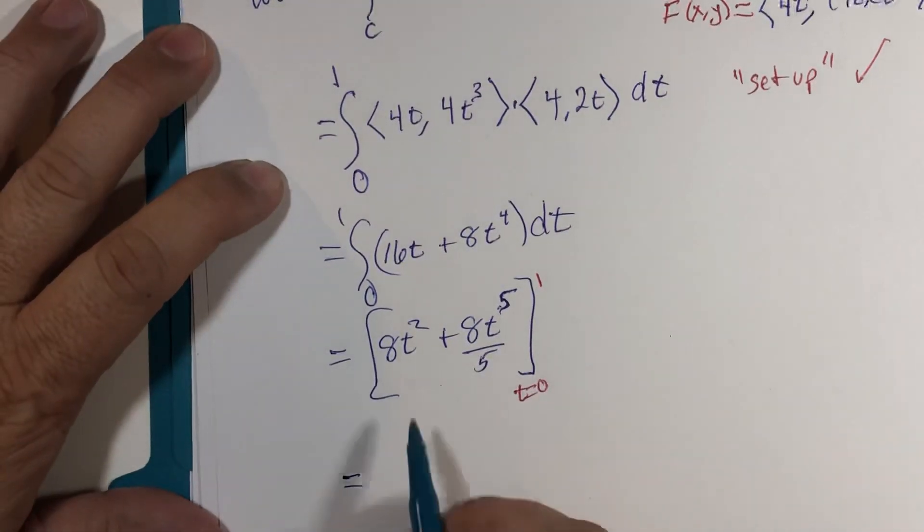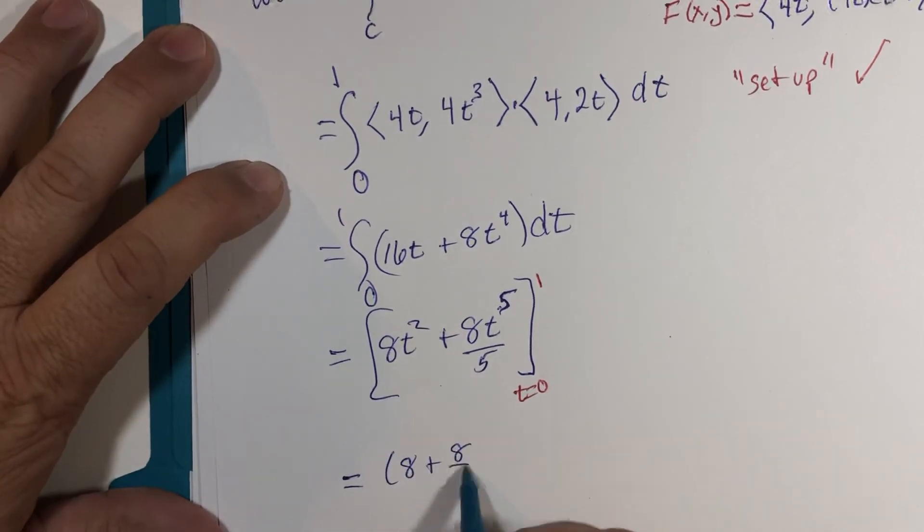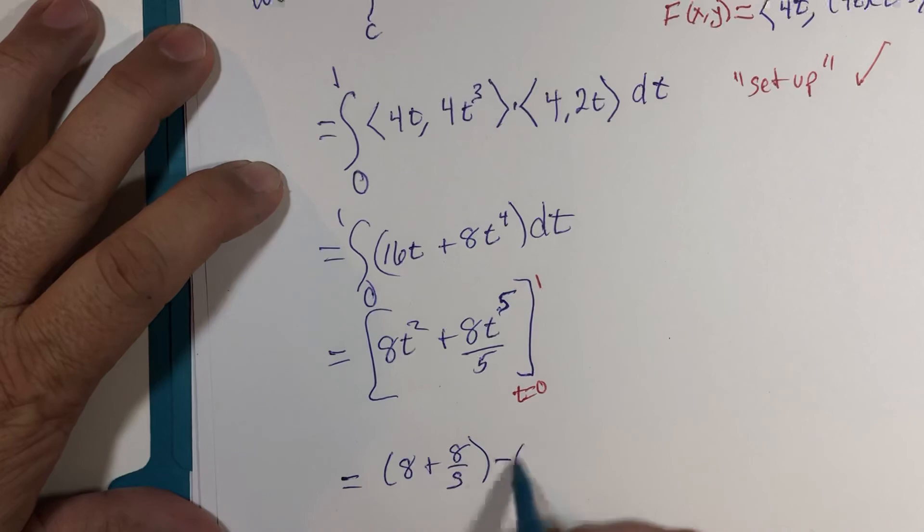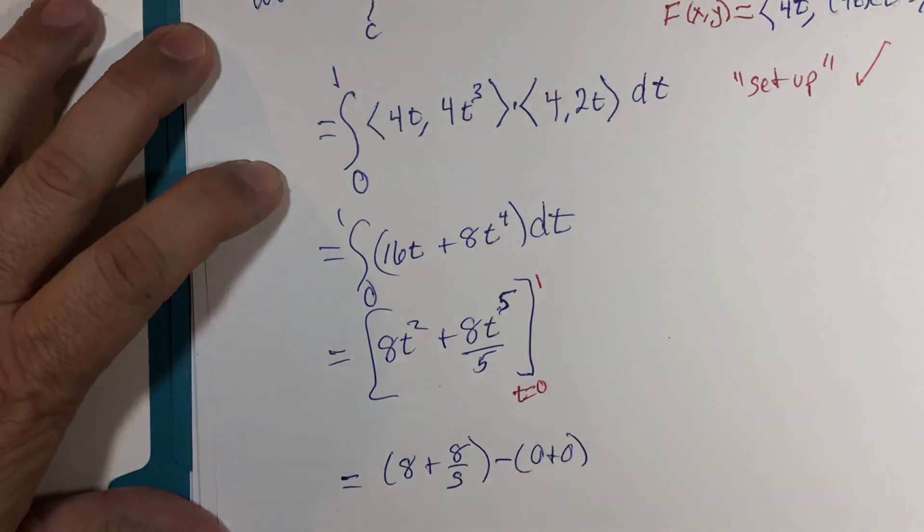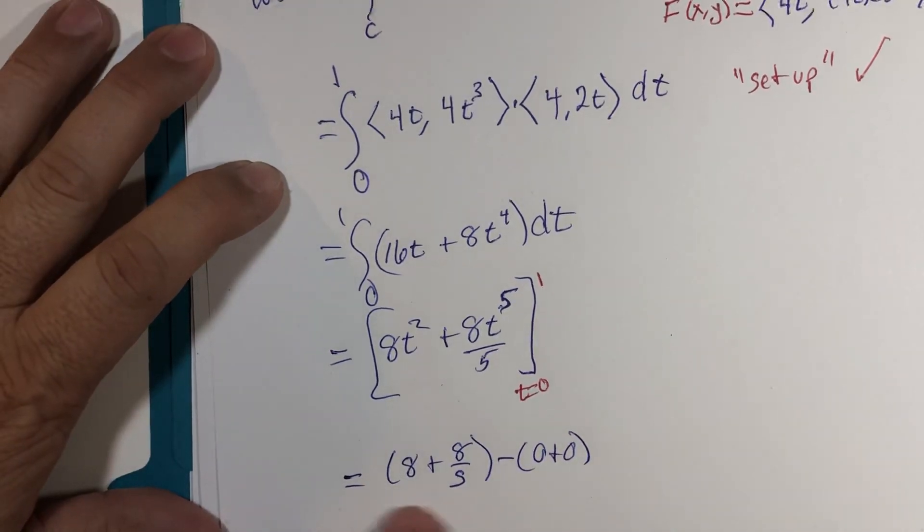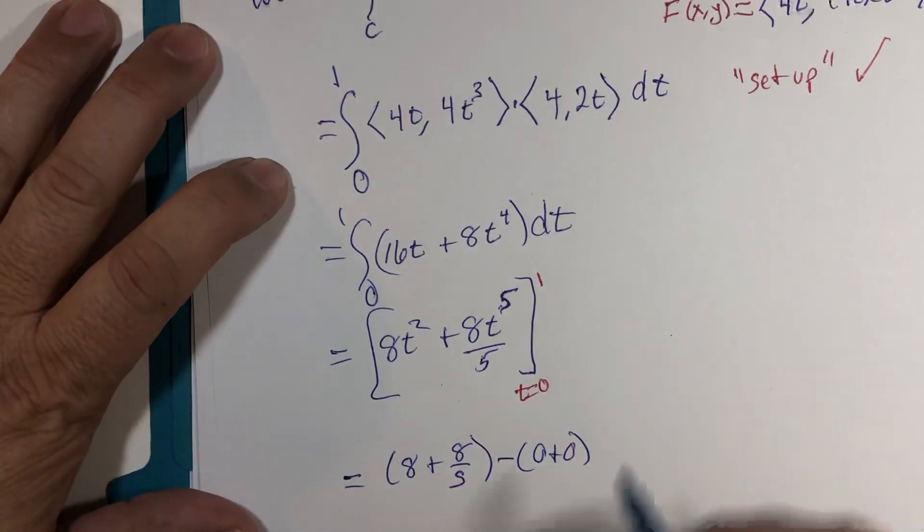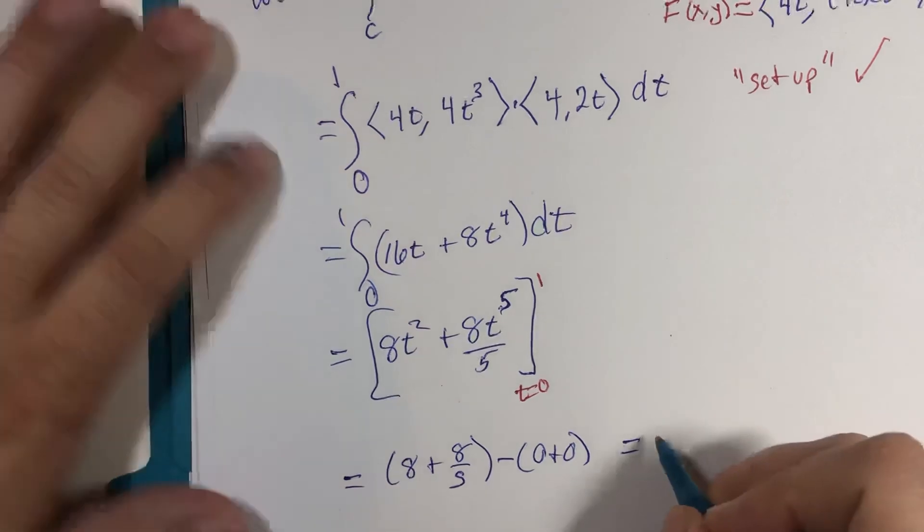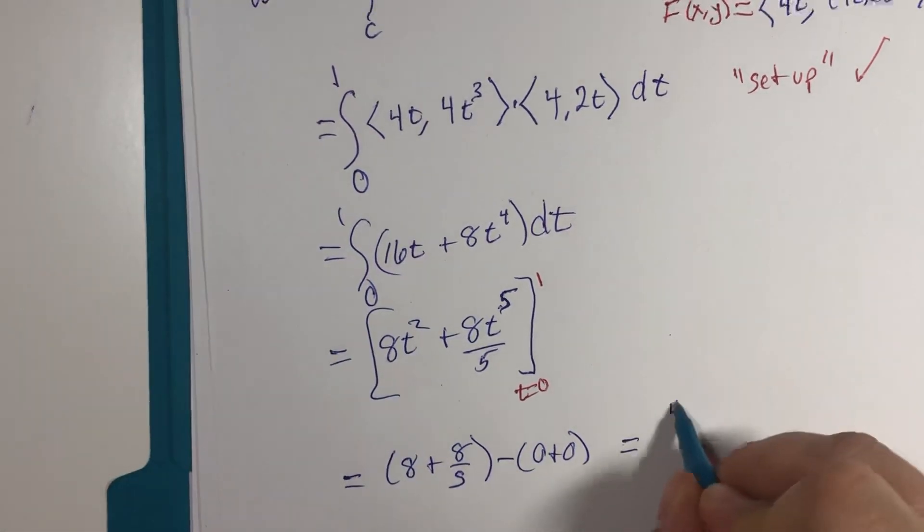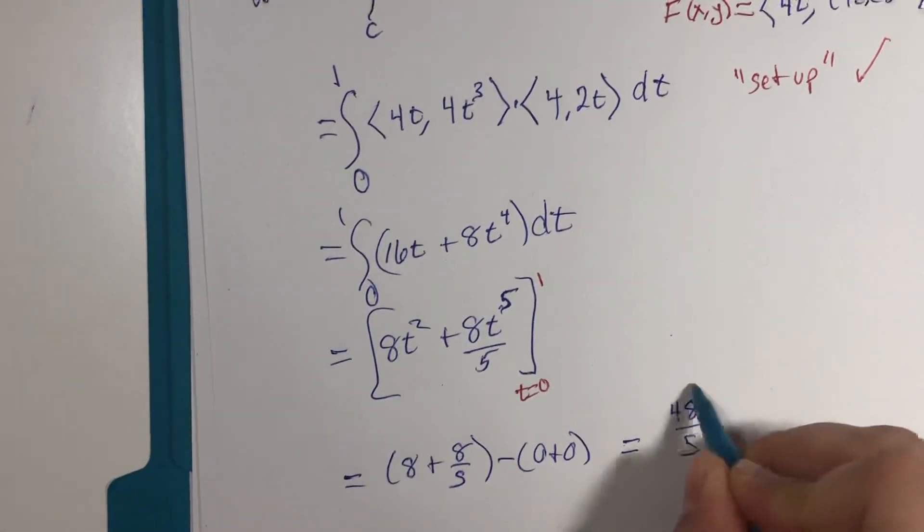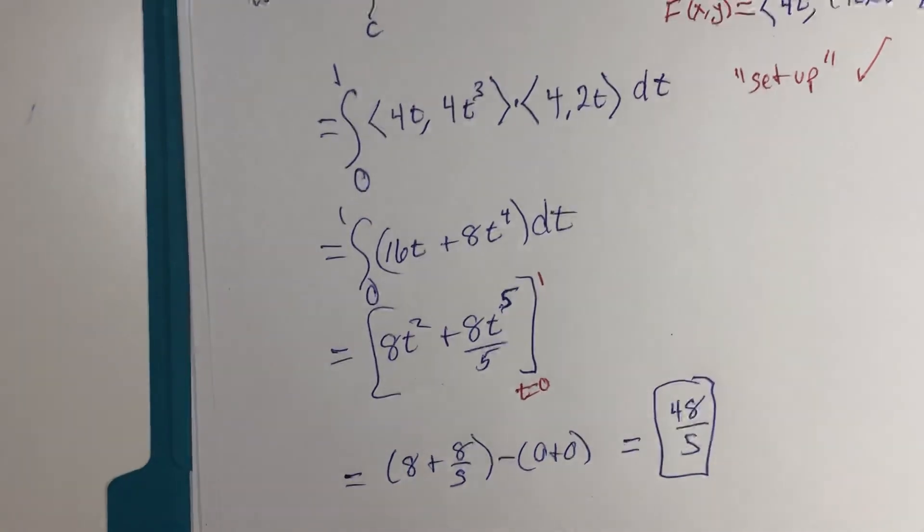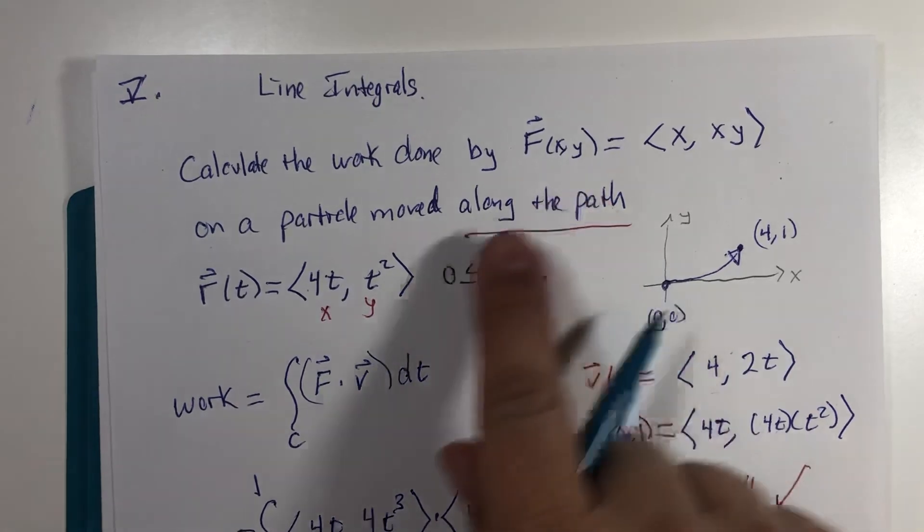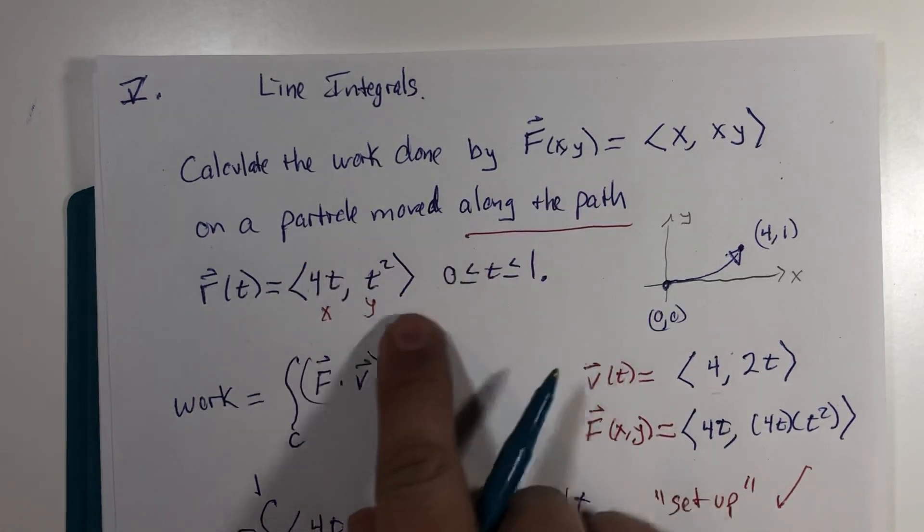That gives us 8 plus 8/5 minus, well, 0 plus 0—it's not very exciting. Combine these together into a single fraction or perhaps even a nice accurate decimal, but it could look like 48/5.